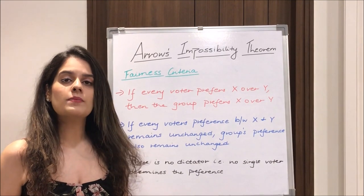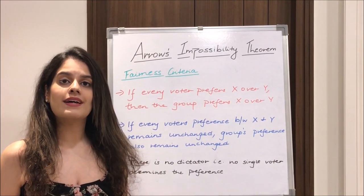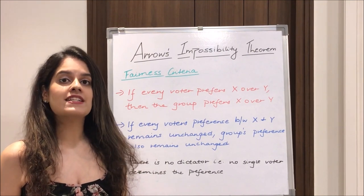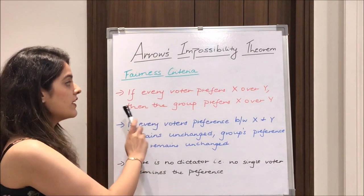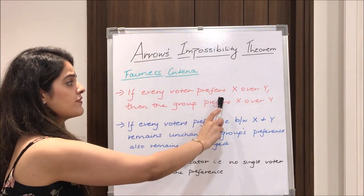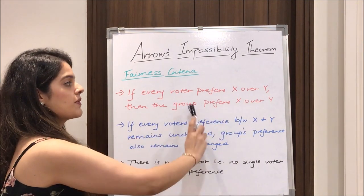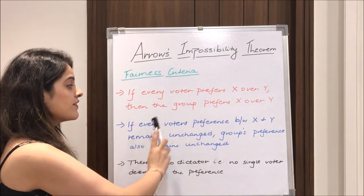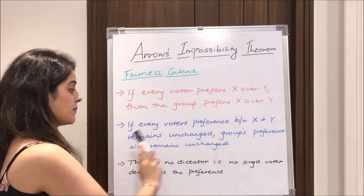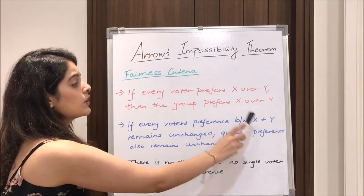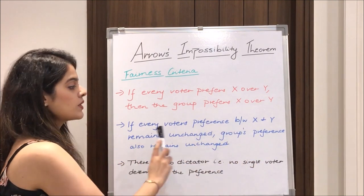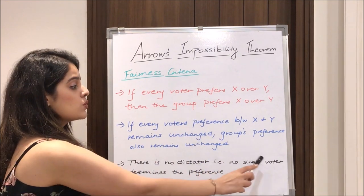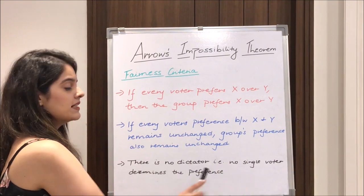In short, the theorem states that no rank-order electoral system can be designed which satisfies three fairness criteria: first, if every voter prefers X over Y then the group should prefer X over Y; second, if every voter's preference between X and Y remains unchanged then the group's preference also remains unchanged; and lastly, there is no dictator — no single voter determines the group preference.